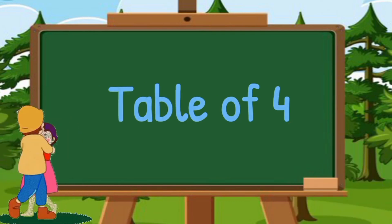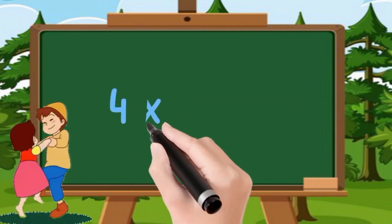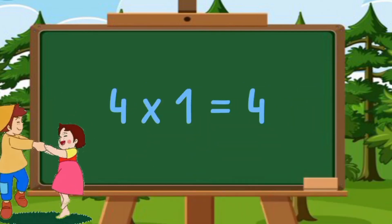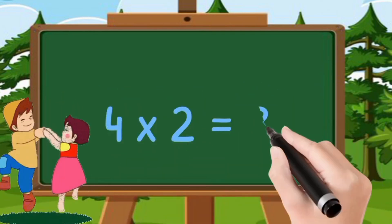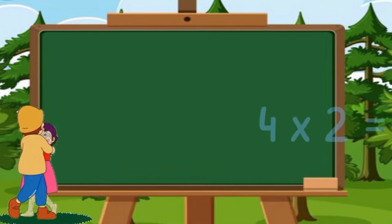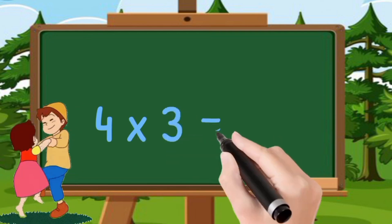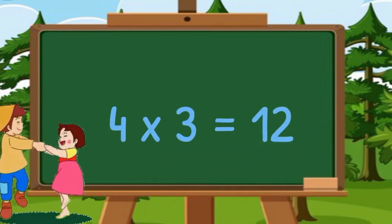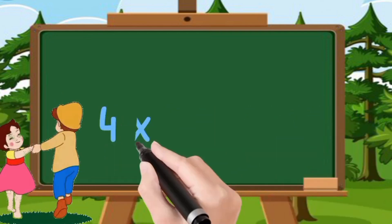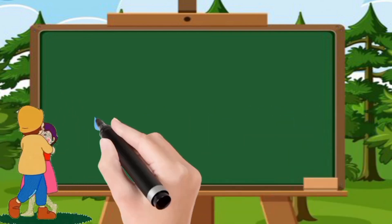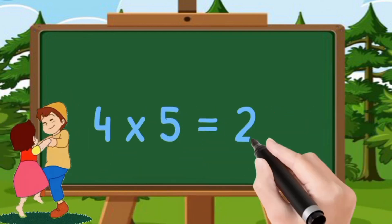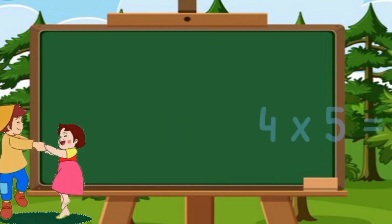Table of four. Four ones are four. Four twos are eight. Four threes are twelve. Four fours are sixteen. Four fives are twenty.